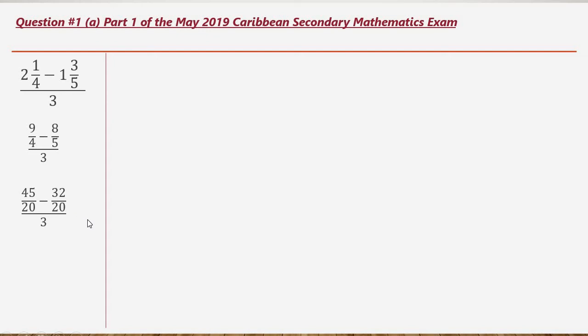So now we can subtract the numerators of the top fractions. All right. So we can subtract these numerators, 45 minus 32 over 20, and that will give us 13 over 20, all divided by 3. So we haven't dealt with the 3 as yet. We haven't divided by 3 as yet.